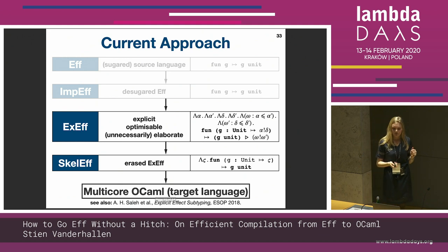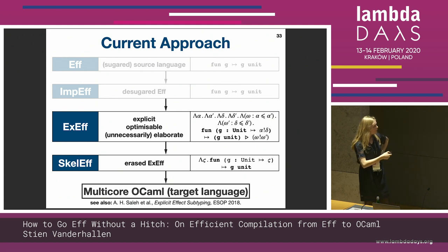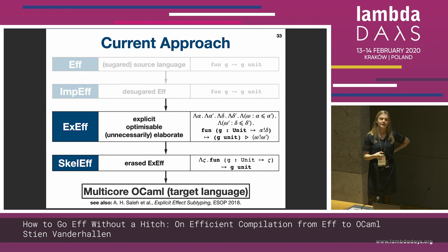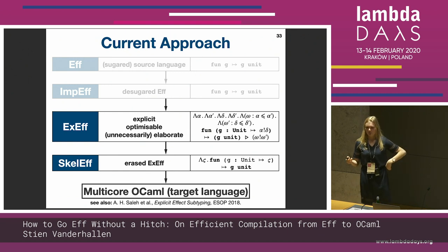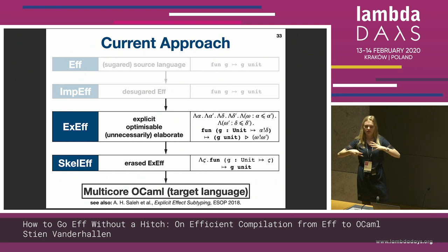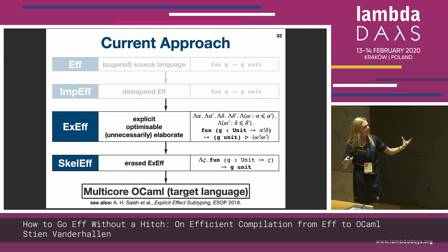More specifically, we introduced two new intermediary languages called XF and Skelf. And XF, as its name suggests, is explicitly typed — there we make the effects, the typing, and the subtyping information all explicit in the terms and in the programs.